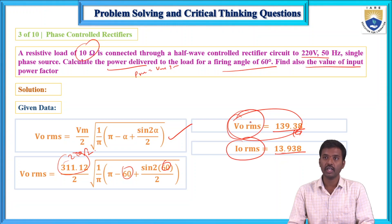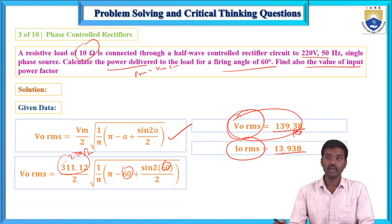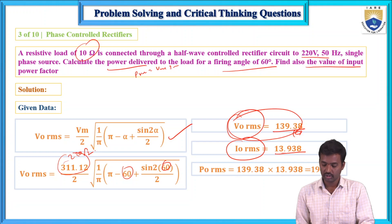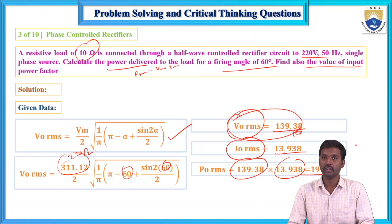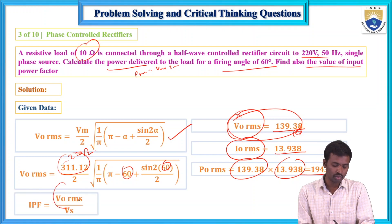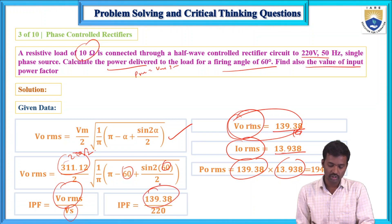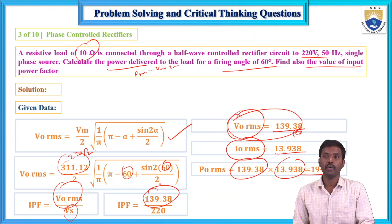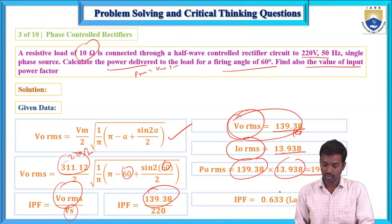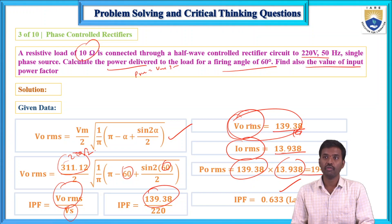Then I_RMS equals V_RMS divided by R equals 139.38 divided by 10 equals 13.938 amperes. Power delivered to the load equals V_RMS times I_RMS equals 1943 watts. The input power factor equals V_RMS divided by V_supply equals 139.38 divided by 220, giving a power factor of 0.693 lagging.